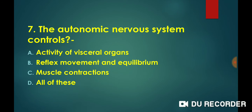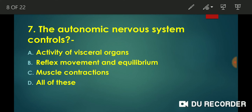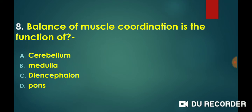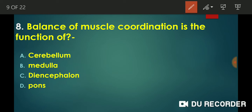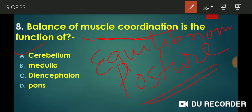The autonomic nervous system controls the activity of visceral organs like the heart, lungs, and kidneys. Regarding the balance of muscular coordination — that function belongs to the cerebellum. The cerebellum maintains equilibrium and posture in our body and is also responsible for muscle coordination. The answer to this question is option A.